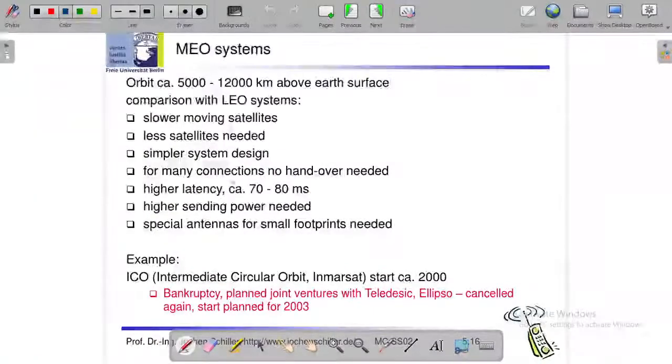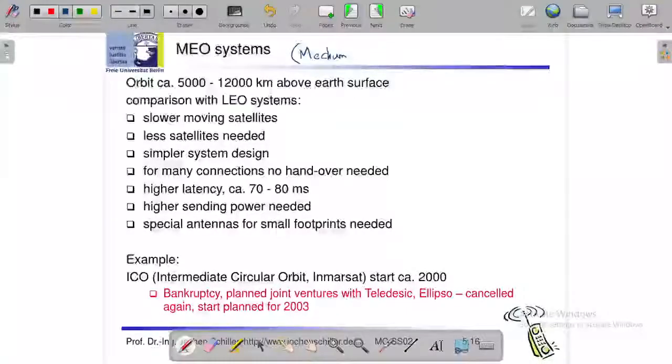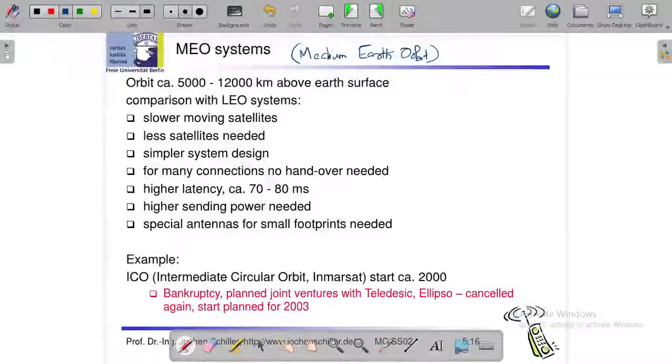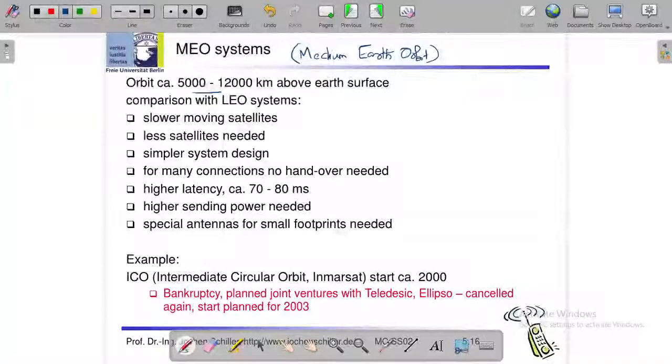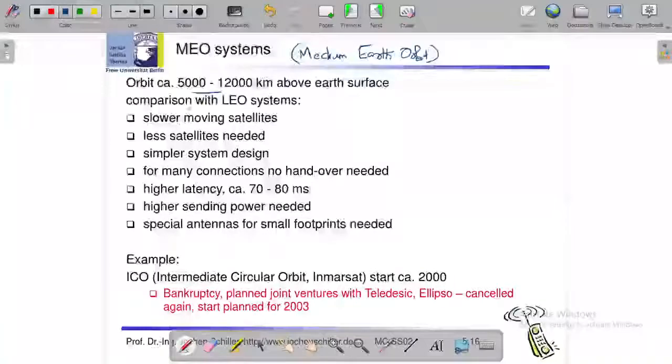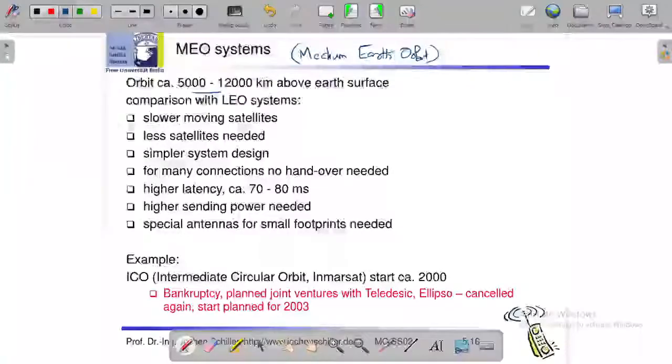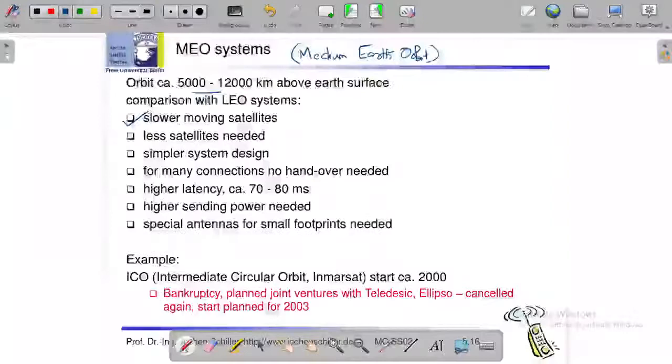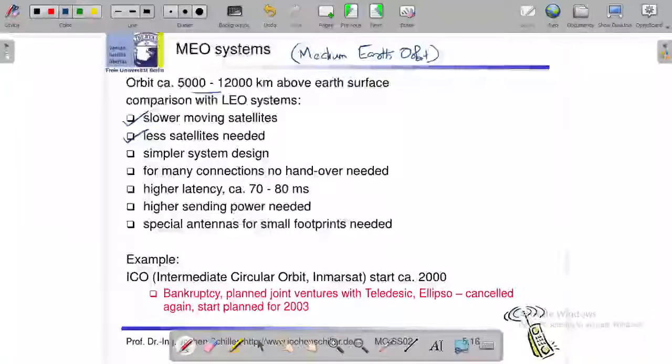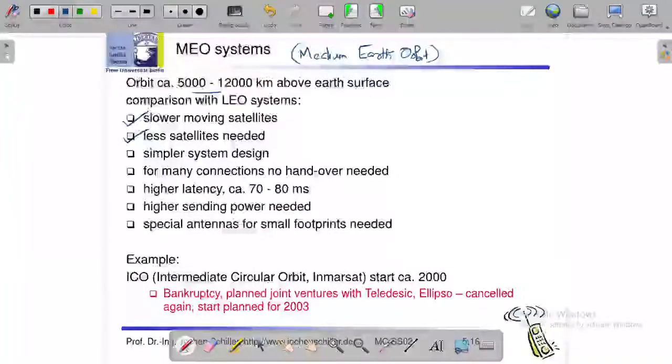Last topic is medium earth orbit. So this distance is 5000 to 12,000 km. We have higher height, so it is slower moving satellite. It is slow move, distance is one of the main reason. That satellites we have, distance is high height.